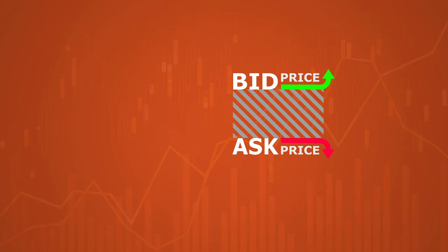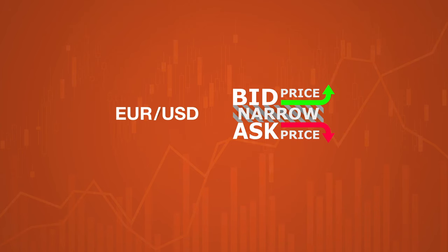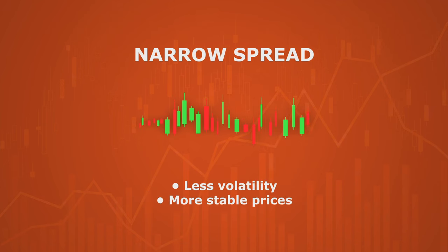The size of the spread varies with each broker according to the volatility and liquidity associated with a particular instrument. A wider spread usually means a greater difference between the two prices; therefore, thin liquidity and high volatility are possible. A tight spread may indicate low volatility and high liquidity.